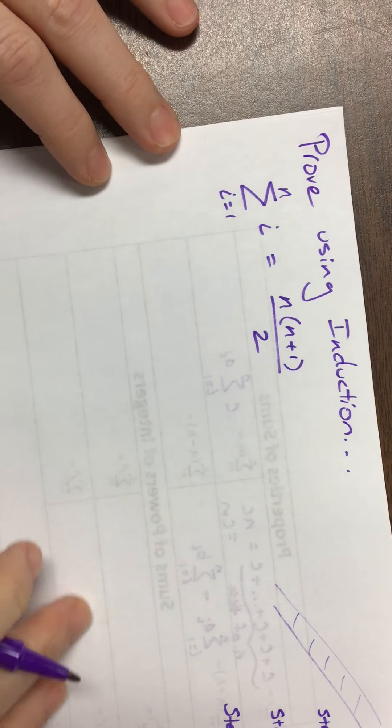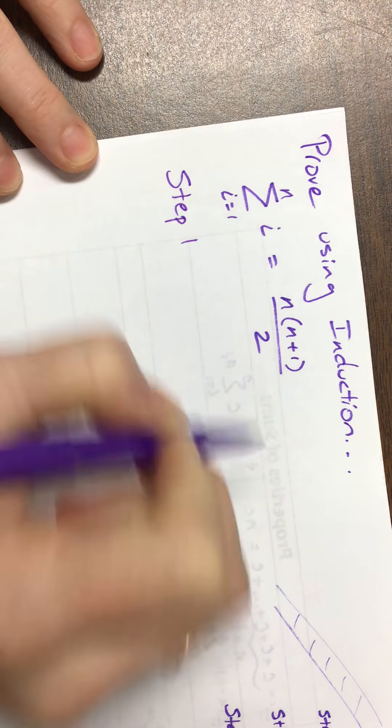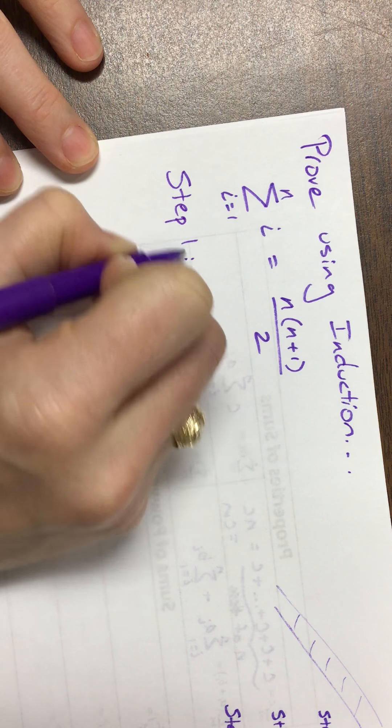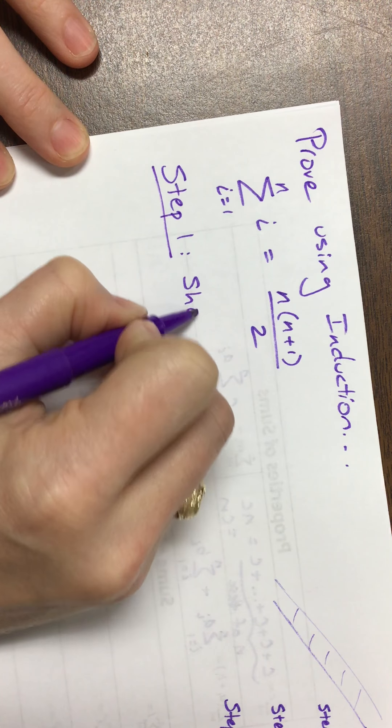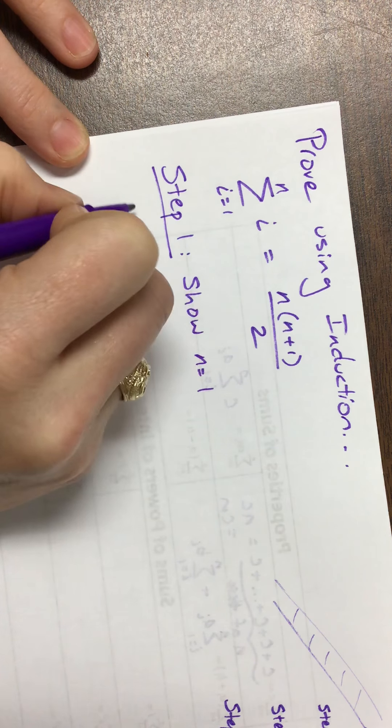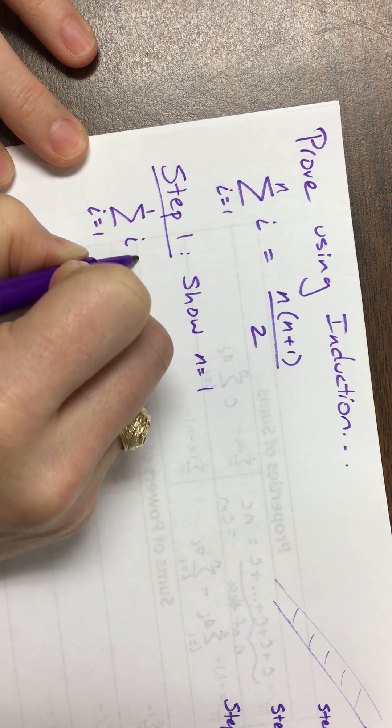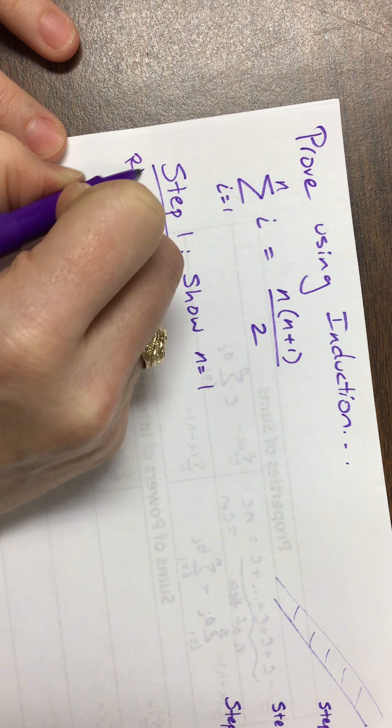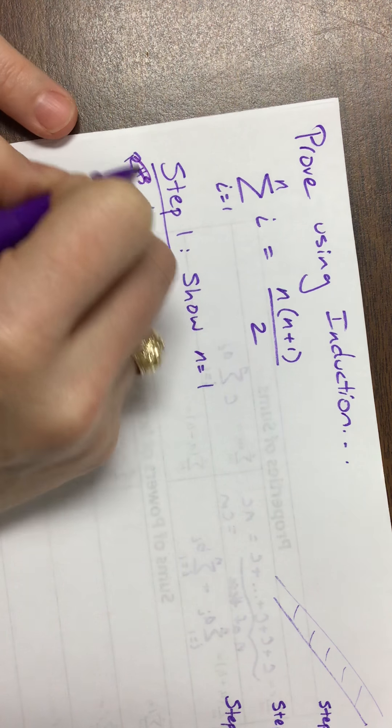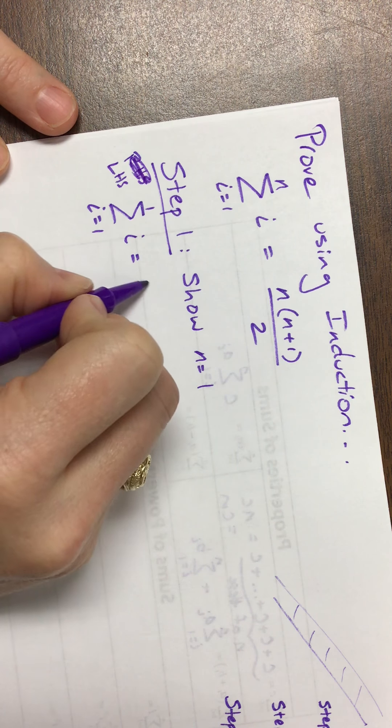So on this first one right here, step one. So sometimes I like to write, and I'm going to ask you to label this very clearly, step one, show n equals 1 is true. So when I plug in this, so this goes, i goes from 1 to 1 of i, well that would just be, sometimes it's helpful to say right-hand side, oh this is the left-hand side, my bad, left-hand side. So the sum as i goes from 1 to 1 is just 1.